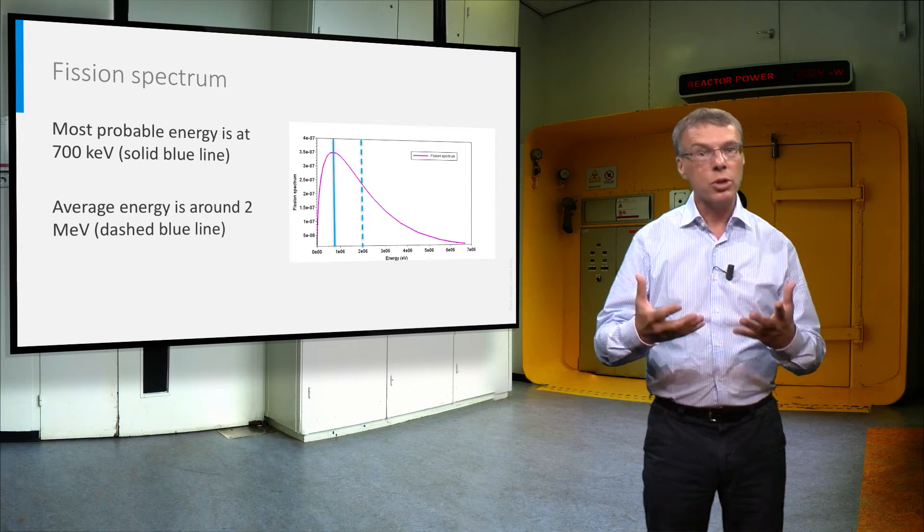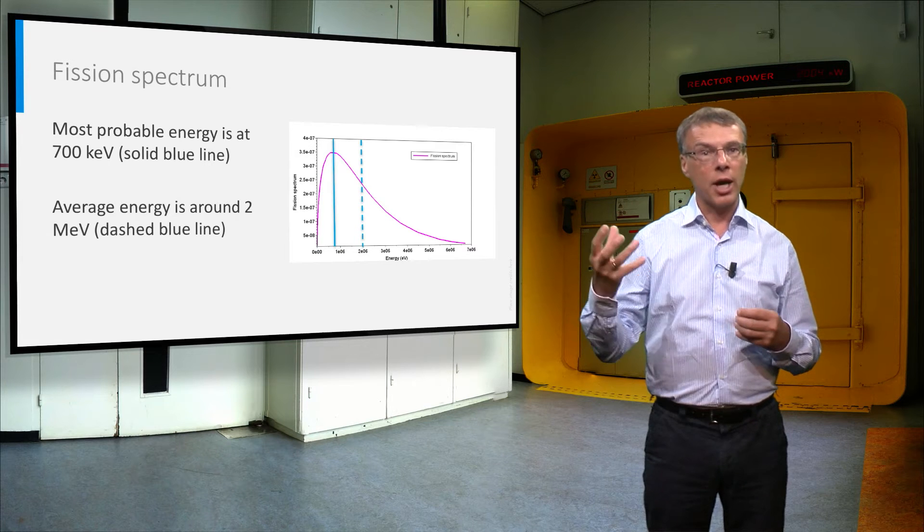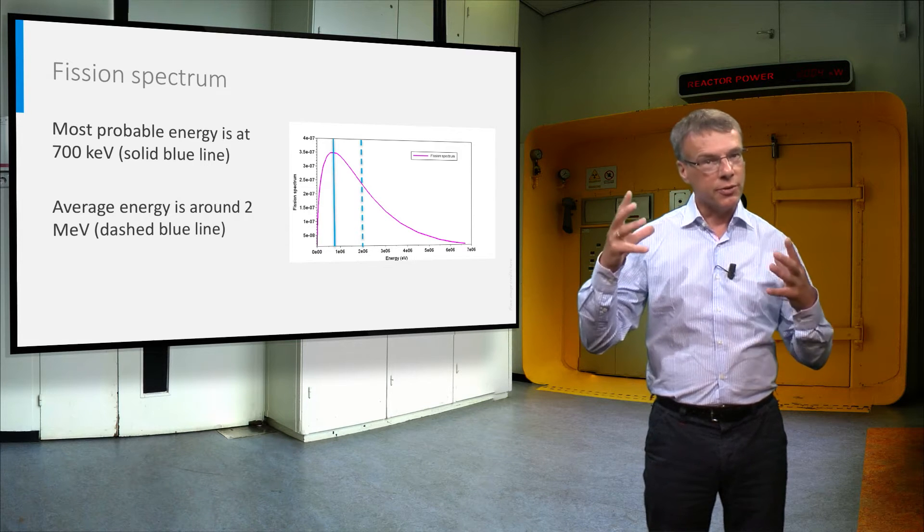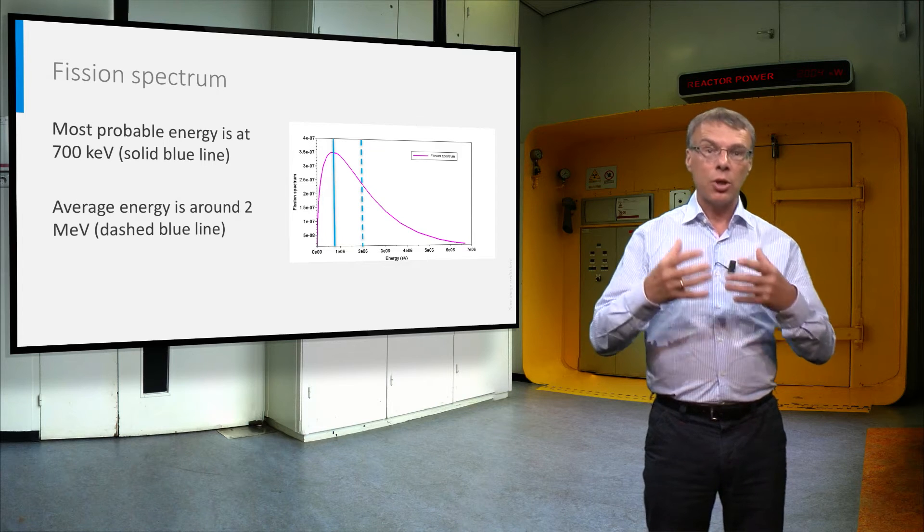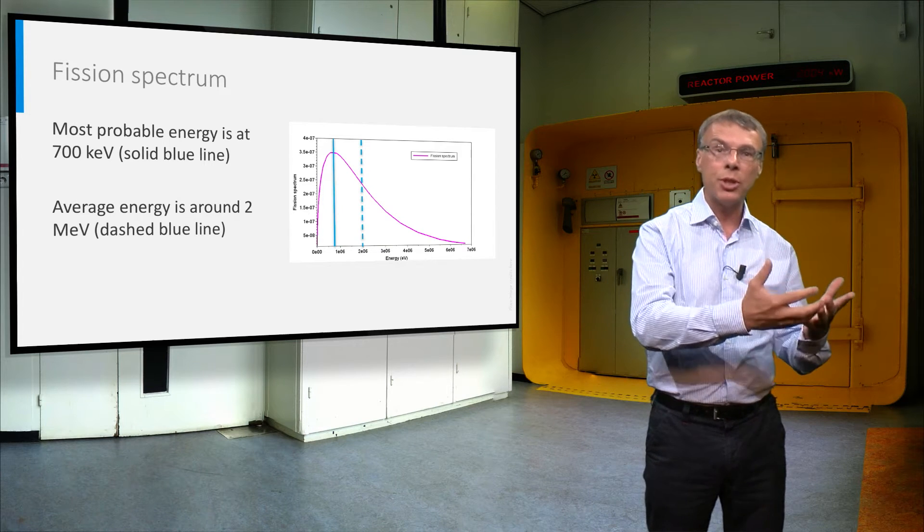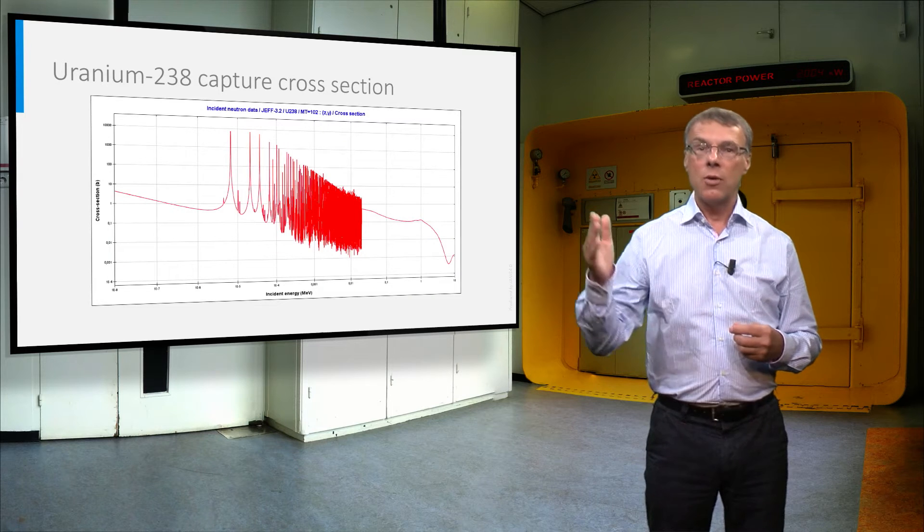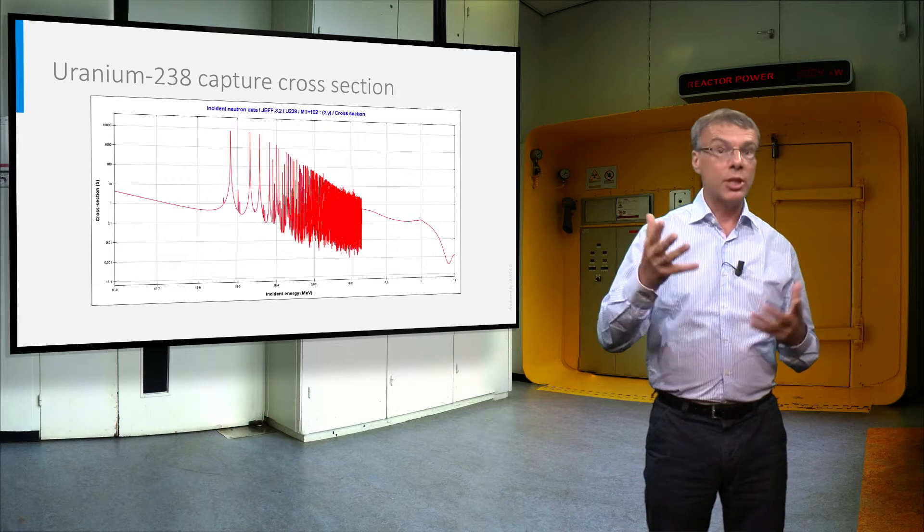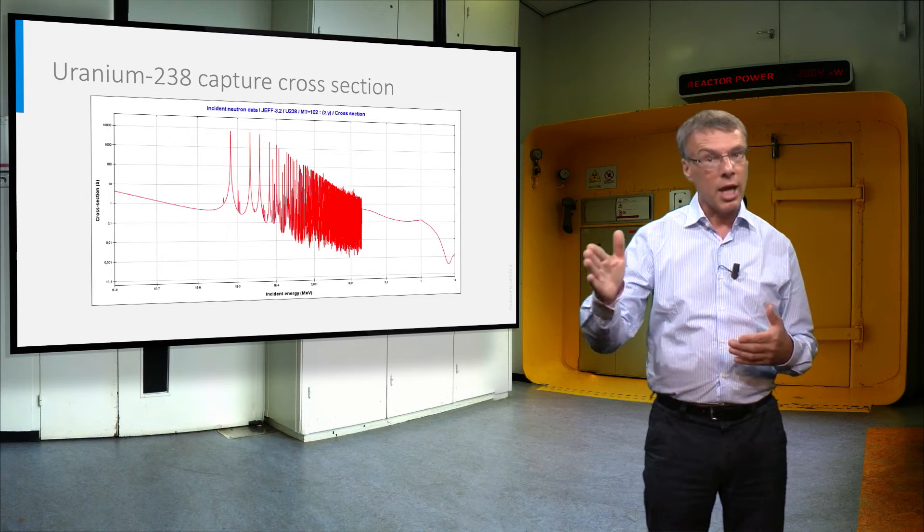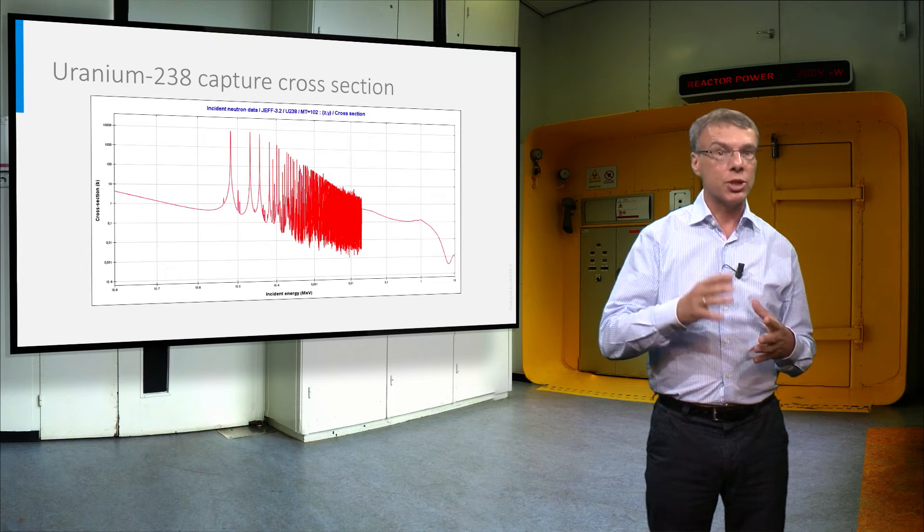Because neutrons lose a lot of energy when they collide with hydrogen atoms, water is a very good moderator. And in many reactors the coolant acts as a neutron moderator as well. When we moderate a neutron, this means we let it collide with nuclides like hydrogen to reduce its energy.